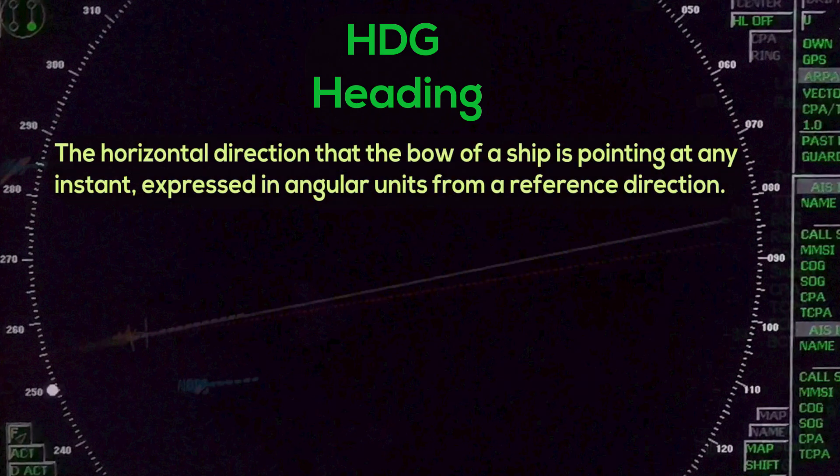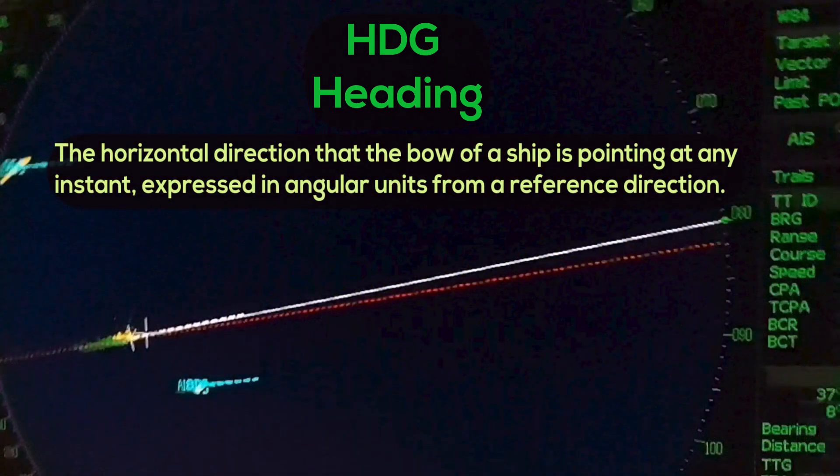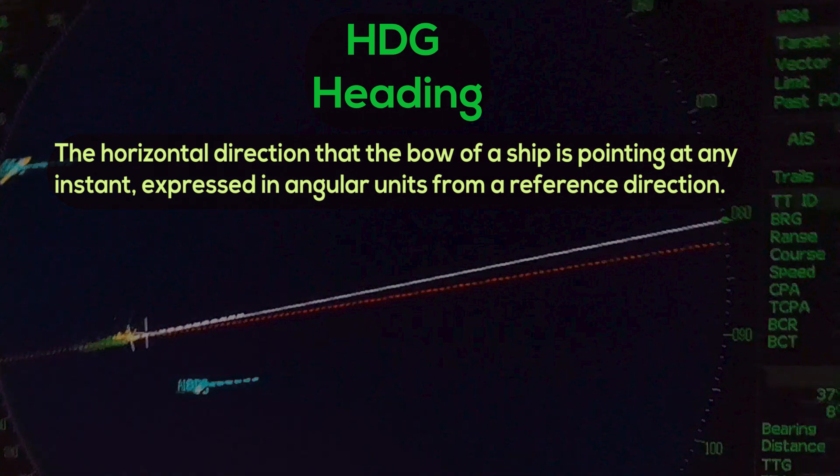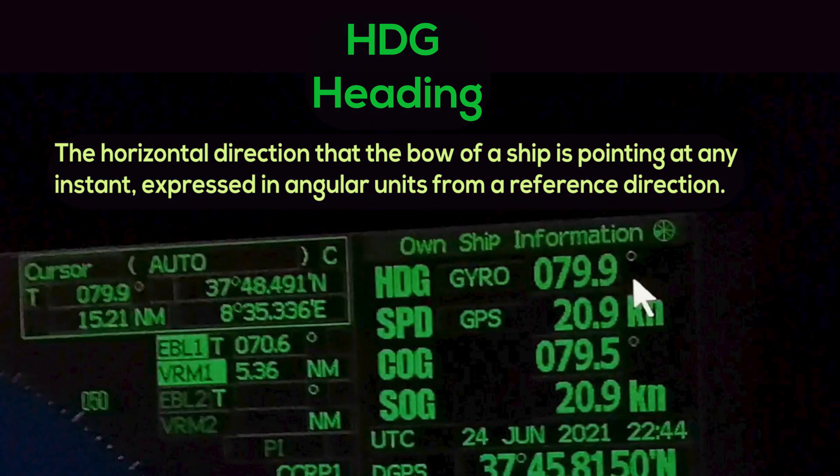HDG — Heading: the horizontal direction that the bow of a ship is pointing at any instant, expressed in angular units from a reference direction.